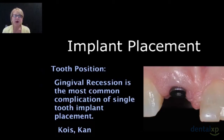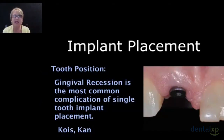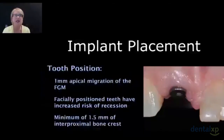The most common complication we're unhappy about when we do implant placement is gingival recession — the actual tissue placement after healing and restorations are complete. It's that movement of the tissue, specifically recession and resorption of both osseous and soft tissues, that seems the most unpredictable. We want to start by looking at how tooth position impacts that.